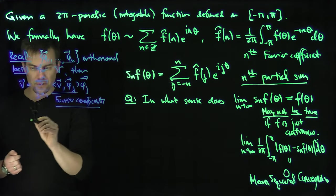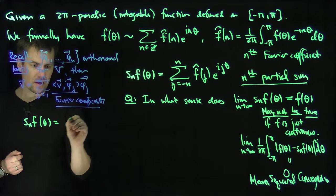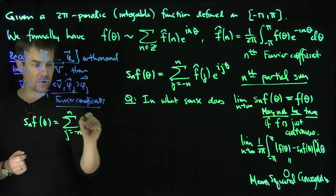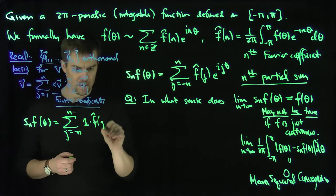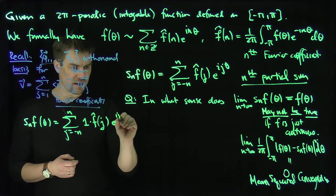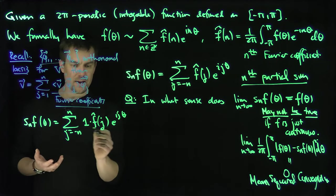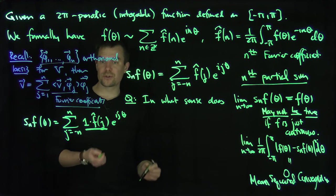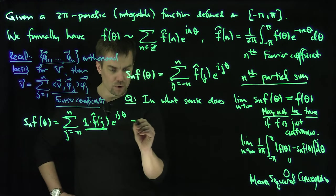So one thing we can trivially note is that Sₙf(θ) is really the sum j goes from negative n up to n of 1 times f̂(j) e^(ijθ). And why did I write this? Because now I know this is really, I can write this as a convolution. This is a convolution of a function whose Fourier coefficients are one at all points. So in other words, what this is, is this is a convolution